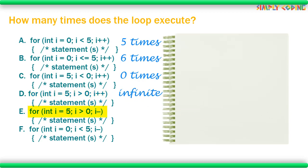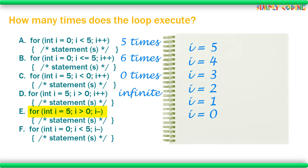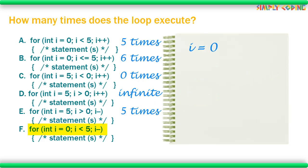In another loop, i starts at zero, condition checks if i is less than five — true — then i is decremented to minus one. The condition is still true and i keeps decrementing, so the check condition will always be true — this is also an infinite loop. Now let's solve the three output questions. First we write the values of i vertically on a rough page. Here i takes values from one to four and exits when i becomes five.